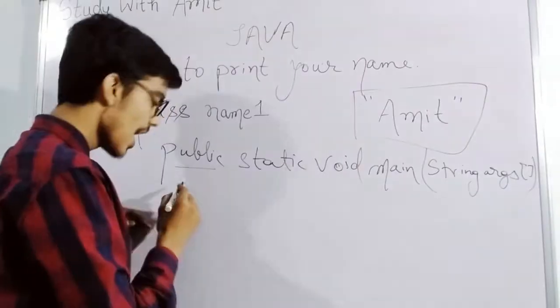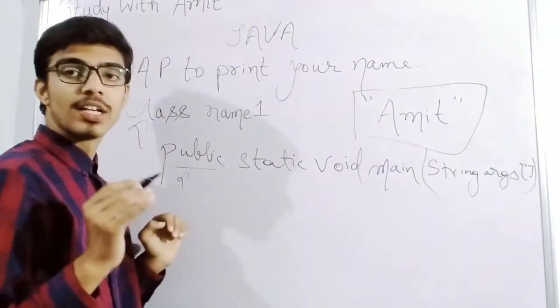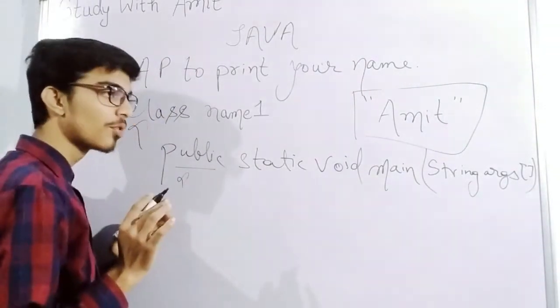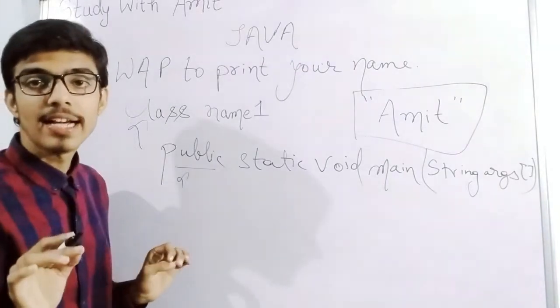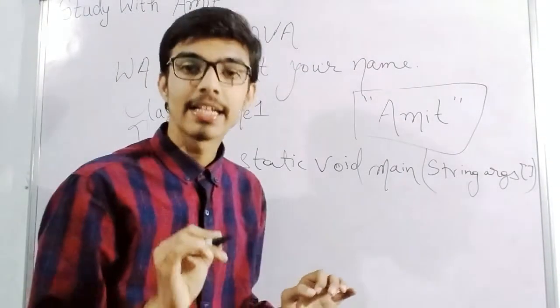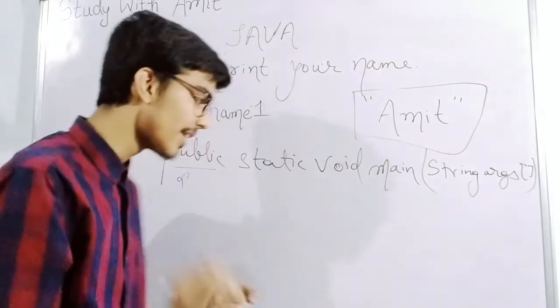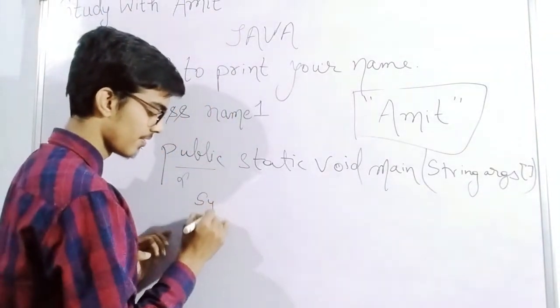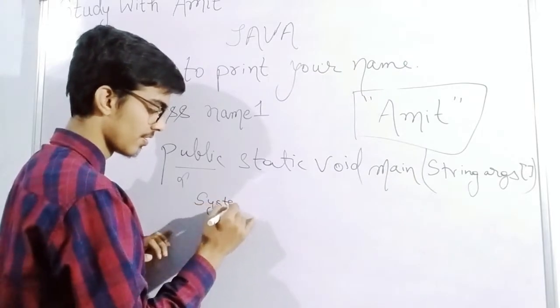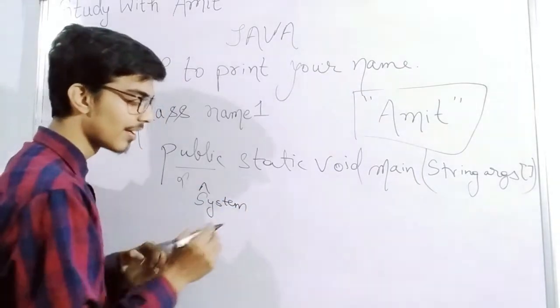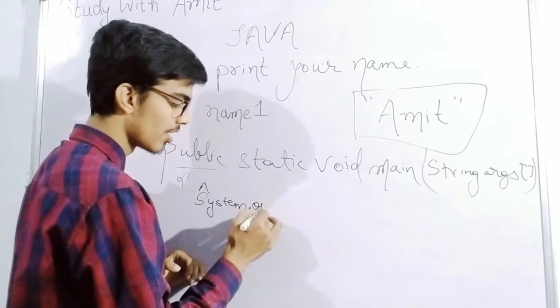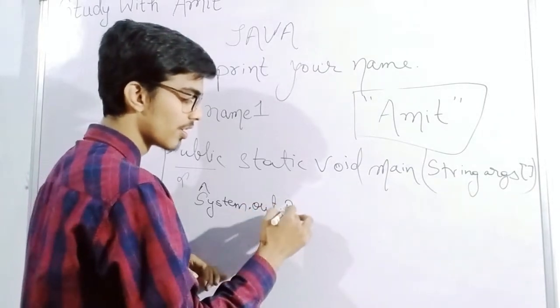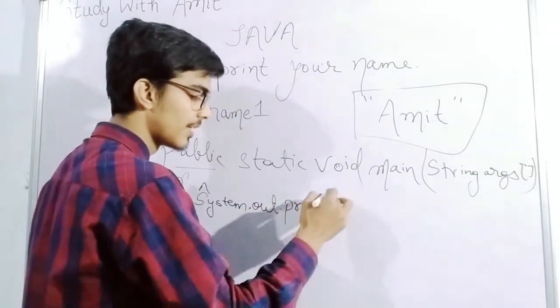After this, we write what? If we have to print, we'll write System.out.println. System with a capital S, dot out, dot println.